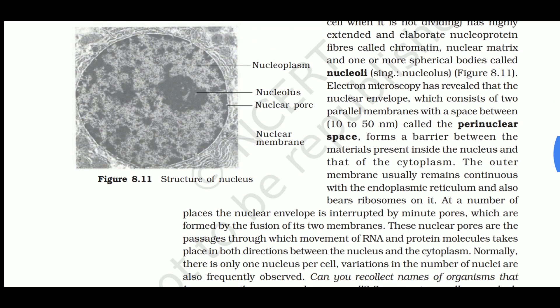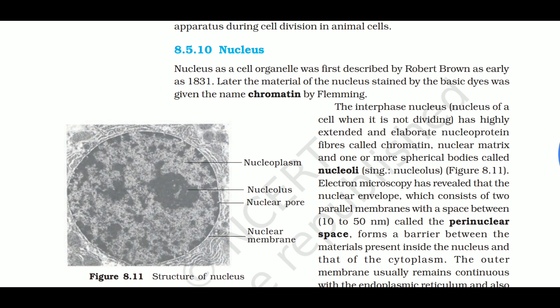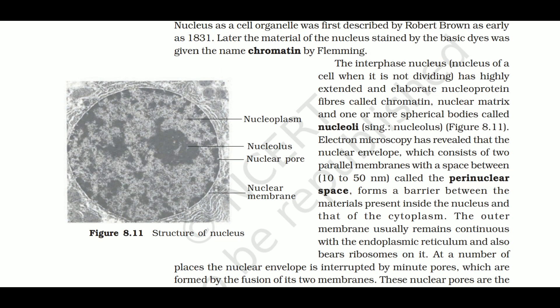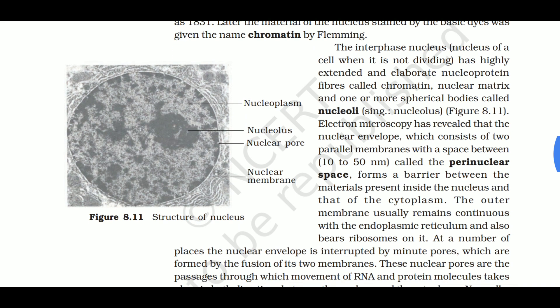Next: the nucleus. The nucleus as a cell organelle was first identified and described by Robert Brown in 1831. Later, the material of the nucleus stained by basic dyes was given the name 'chromatin' by Fleming. The interphase nucleus is the nucleus of a cell that is not dividing.